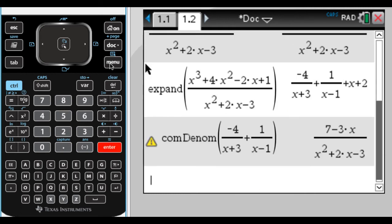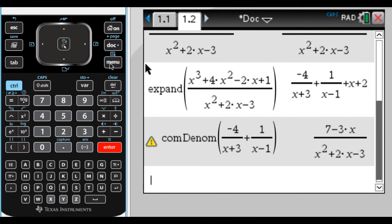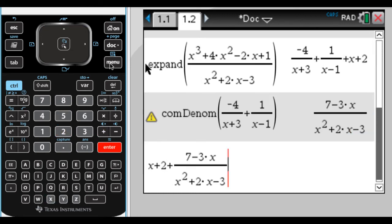And now when I press enter, it combines those, gets the common denominator. And that's what I would have gotten by hand if I had done this problem. So the answer I would have gotten by hand would have looked like x plus 2 plus this.